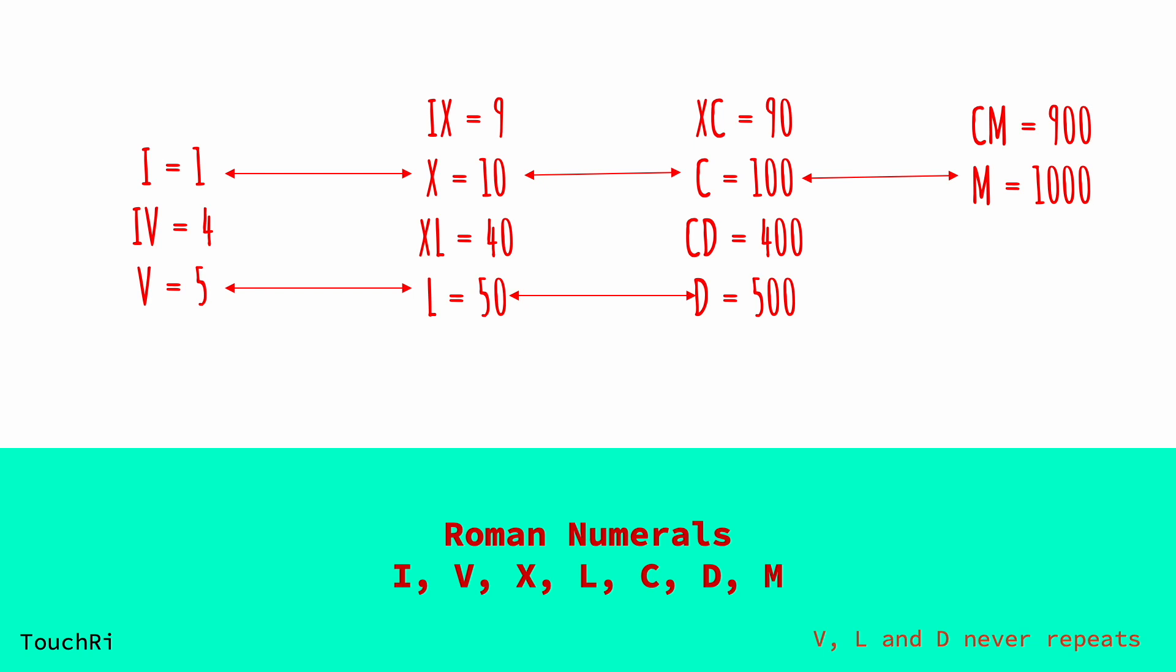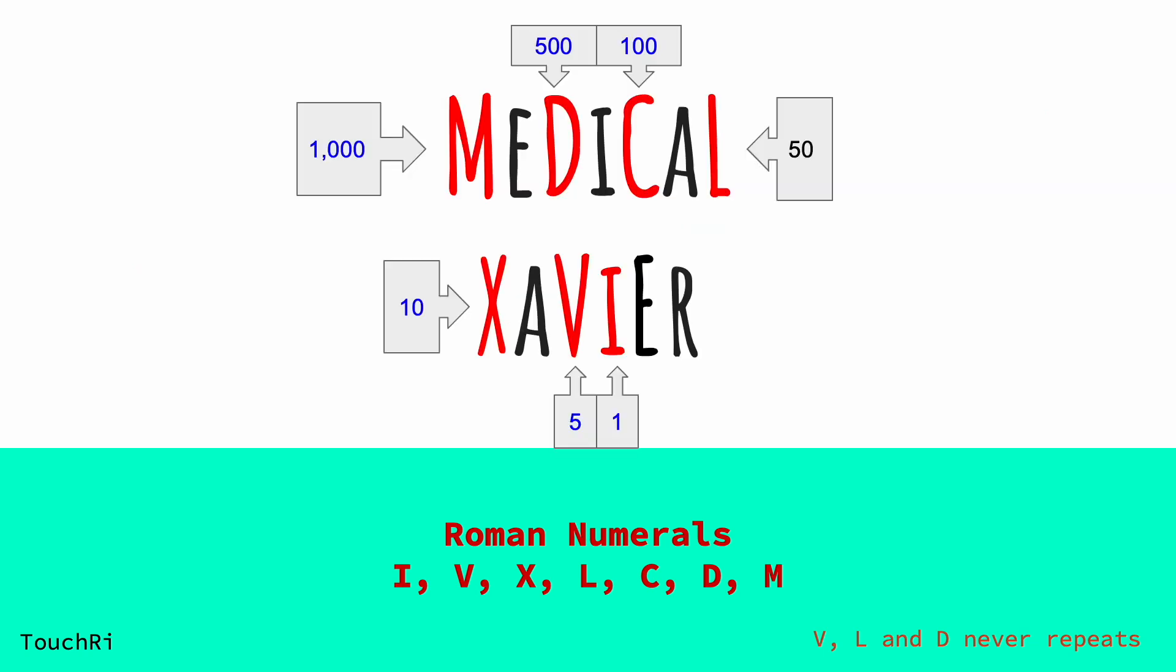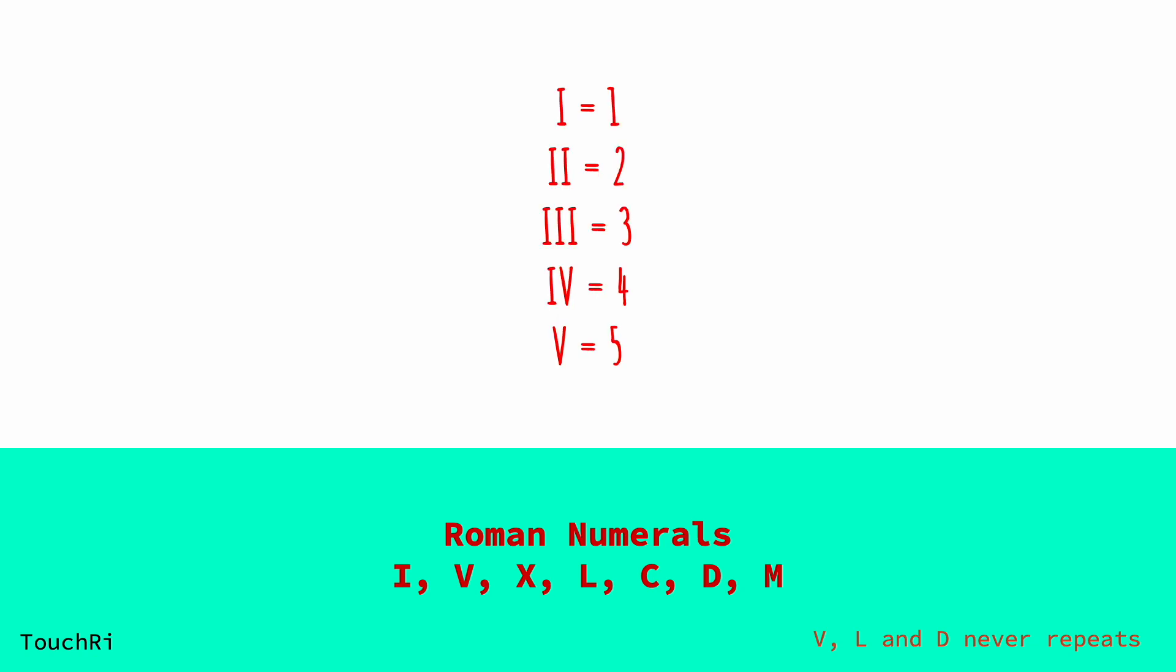But it doesn't stop there. Roman numerals use a combination of these letters to form different numbers. For instance, IV represents 4, IX represents 9, and XL represents 40. The key is to understand the rules of their formation.